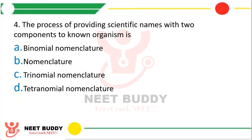Question 4. The process of providing a scientific name with two components to any known organism is called: Option A, Binomial Nomenclature; Option B, Nomenclature; Option C, Trinomial Nomenclature; or Option D, Tetranomial Nomenclature. The correct answer is Option A, Binomial Nomenclature. Nomenclature is the process of providing a scientific name, and since we have two components — bi means two, nominal means names — each name in binomial nomenclature has two components: the genus and the species.